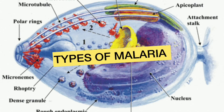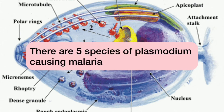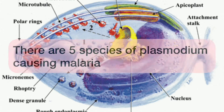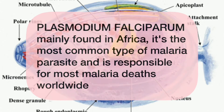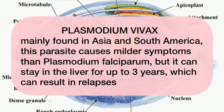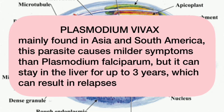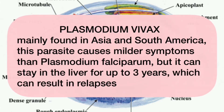There are five species of plasmodium causing malaria. Firstly, we have Plasmodium falciparum, mainly found in Africa. It's the most common type of malaria parasite and it's responsible for most malaria deaths worldwide. The second type is Plasmodium vivax, mainly found in Asia and South America. This parasite causes milder symptoms than Plasmodium falciparum, but it can stay in the liver for up to three years, which can result in relapses.